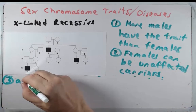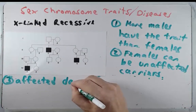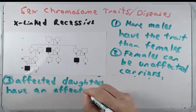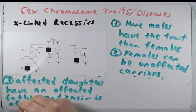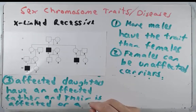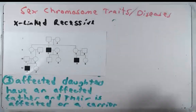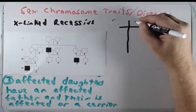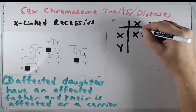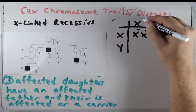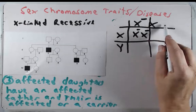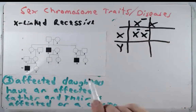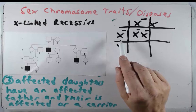Feature three: affected daughters have an affected father, and their mother is affected or a carrier. In order to have a daughter who is X-minus X-minus — the only way she could be affected — the mom has to at least be a carrier and provide one mutated X chromosome. The dad also has to provide a mutated X chromosome, and if he has a mutated X chromosome he is affected.